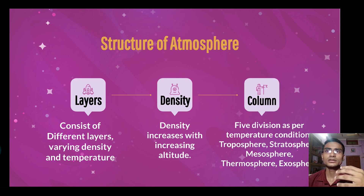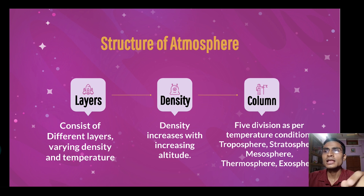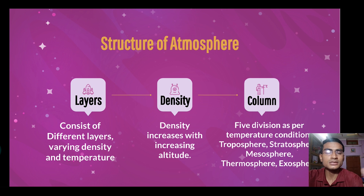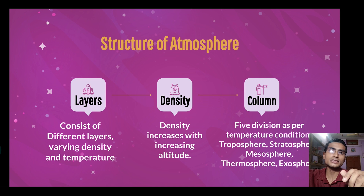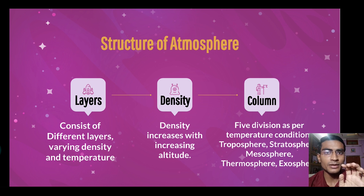Now let us look at the structure of the atmosphere — what does our atmosphere look like? Just as living and non-living things have structure, our atmosphere also has a structure. The atmosphere is made up of many layers, each with different density and different temperature. As height increases, density decreases. There are mainly five divisions based on temperature conditions.